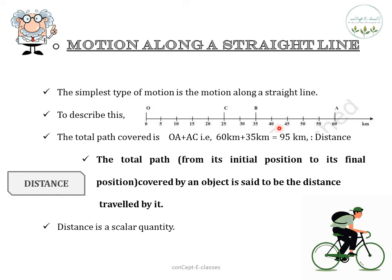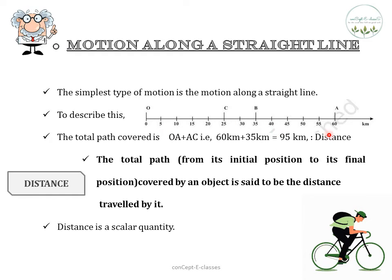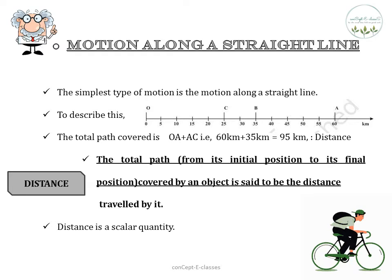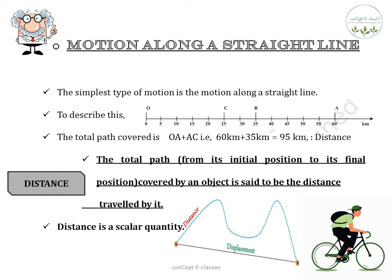Now if the object starts from O, reaches A, then comes back to C through B, what is the total path covered? OA plus OC, that is 60 plus 35 which equals 95 kilometers. This total path that the object covered is called distance. The total path covered by an object from its initial position to its final position is called the distance travelled by it.